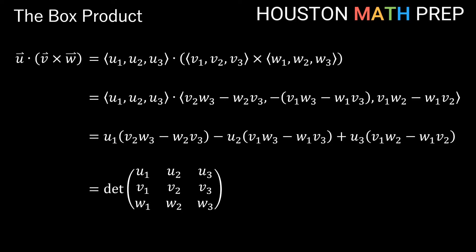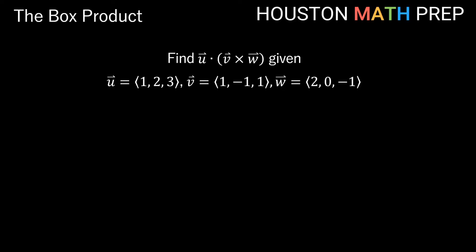This formula can actually be calculated all in one shot using the determinant method we showed you in our cross product video. Only instead of having i-hat, j-hat, and k-hat for the first row, we just have vector u instead. We already know how to do this from cross products — here it's just a slight adaptation of the first row.